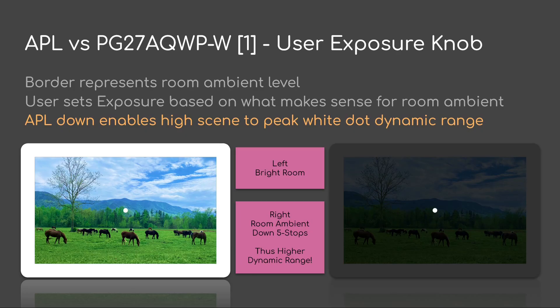The user would set exposure based on what makes sense for the room ambient. If the room ambient goes down — i.e. a darker room — APL goes down. As the APL drops, you'll notice that the scene ratio to that peak white dot in the middle — i.e. the dynamic range — also increases. So on the left we have a bright room, and then on the right the room's ambient level is down five stops, and thus we have higher effective dynamic range.